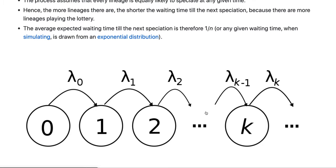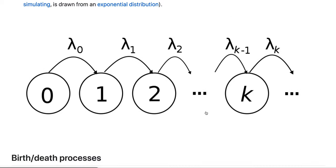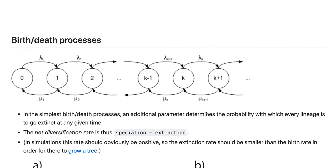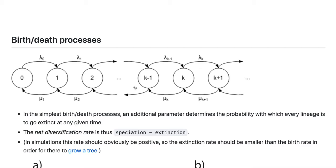We know that the history of life on Earth wasn't one where there was only just accumulation of lineages, there's also extinction. So you guessed it, the next process is a process where we have births, just like before, which have a birth rate of lambda.